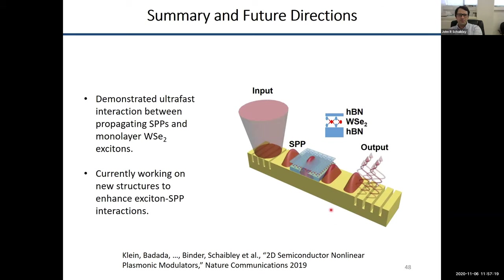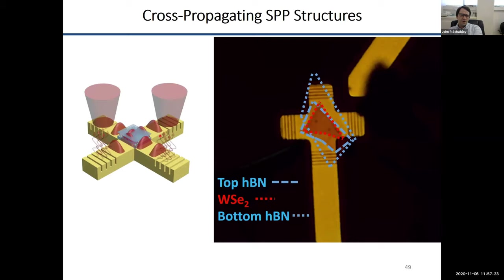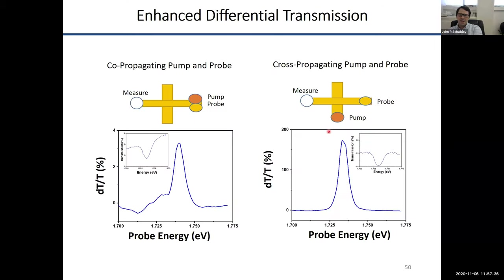We've now developed cross-waveguide structures where, unlike before where we were pumping and probing along the same direction, we can now pump along one direction and probe along the other. This is an optical image of one of the devices Matt made. Whereas before we saw a differential transmission DT/T response of about 3%, in this cross-pumping structure we can actually get a DT/T of over 160% — a hundred-fold increase in the differential transmission signal. In this case, the differential transmission signal is actually larger than the transmission when we're on resonance.